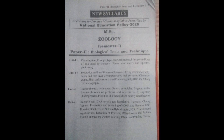Gel exclusion chromatography, high performance liquid chromatography (HPLC), affinity chromatography. Unit Three: Electrophoresis techniques — general principle, support media, electrophoresis of protein and nucleic acid, capillary electrophoresis, principle of differential and density centrifugation. Unit Four: Recombinant DNA techniques — restriction enzymes, cloning vectors, preparation and screening of cDNA and genomic DNA libraries, Southern and Northern hybridization, PCR principles and applications. Detection of protein-DNA, protein and protein-protein interaction, western blotting, DNA footprinting, EMSA.